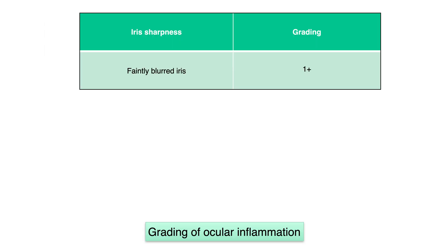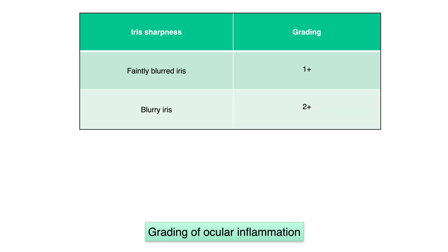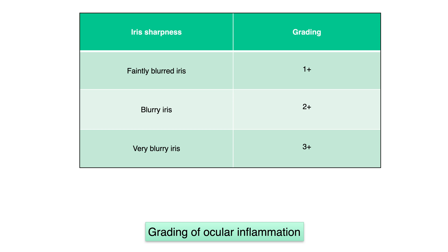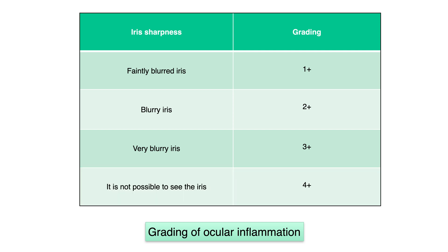If we see the iris just slightly blurry, we will classify it and reflect it in the medical history with one cross — a flare of one cross. If we see the iris in a clearly blurry way, that is two crosses. When we find it very difficult to see the iris and it looks very blurry, that is three crosses. We will record a flare of four crosses in the clinical history when it is not possible to see the iris at all.